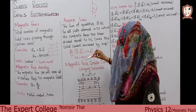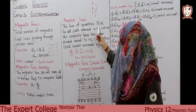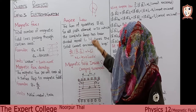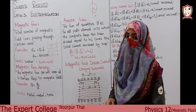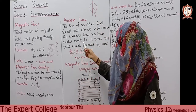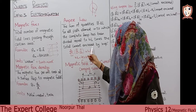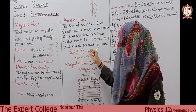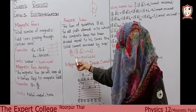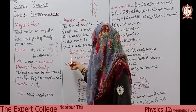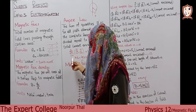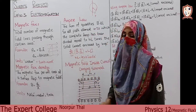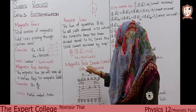So the sum of all quantities B · ΔL for all path elements in which the closed loop has been divided is equal to μ₀ times the total current enclosed by the loop. Mathematically: Σ (from i=1 to n) B · ΔL = μ₀ · I. Here μ₀ is the permeability of free space, whose value is 4π × 10⁻⁷ weber per ampere per meter.